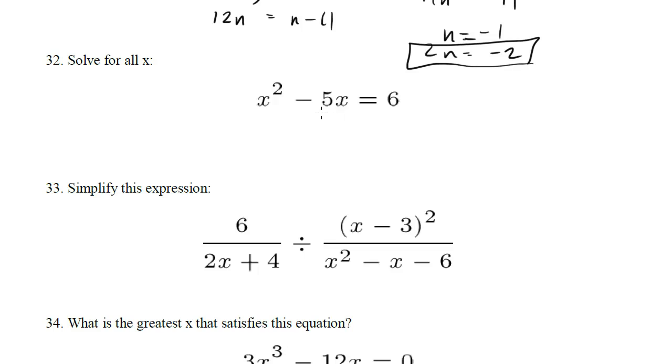Solve for all x. You might try to pull out an x and solve for this, but what you really need to do is bring the 6 over here. So we get x squared minus 5x minus 6 equals 0, and now we factor this as a quadratic.